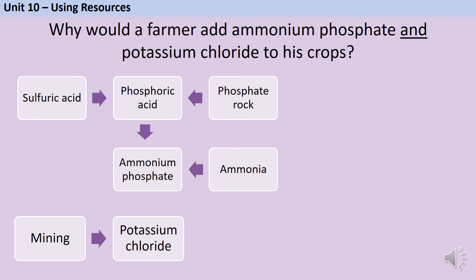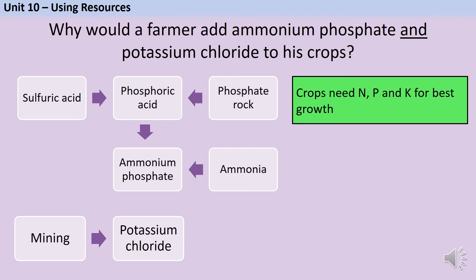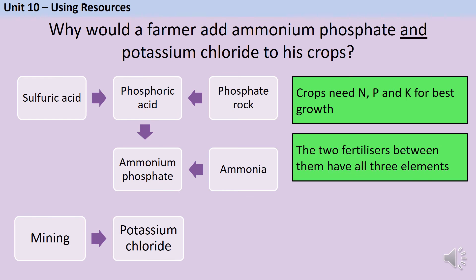Alternatively, you could be asked why a farmer would use both of those compounds when treating crops. The question might not use the term NPK fertiliser — it's asking you to identify that crops need nitrogen, phosphorus and potassium for their best growth, and that by adding both compounds together you have all three of those elements covered.